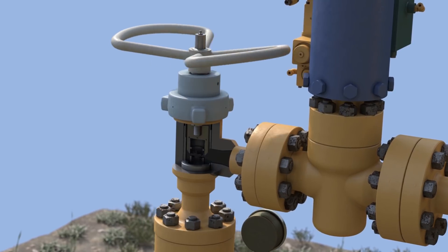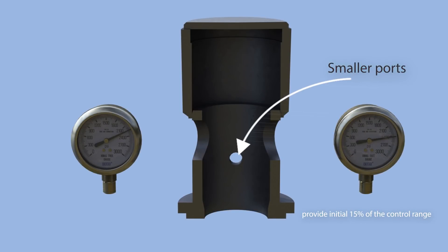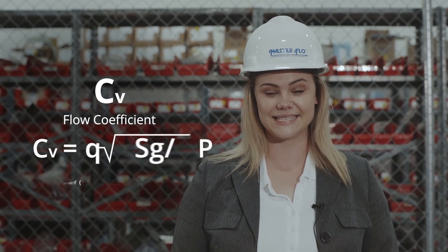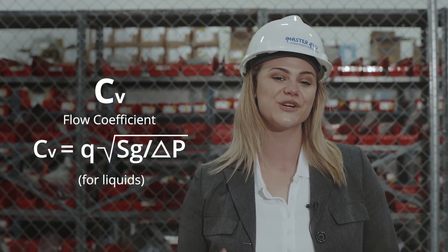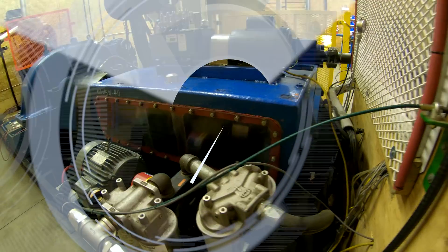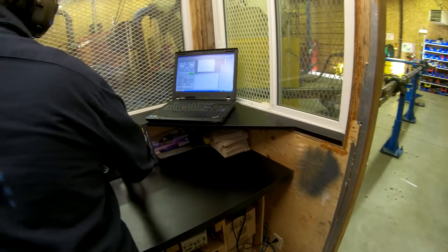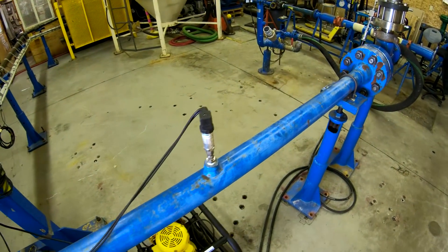MasterFLOW's standard trim provides a high level of control over its life. The smaller, lower ports provide the initial 15% of the control range, while the larger ports provide the valve's overall capacity. This results in an equal percentage flow characteristic curve and high liquid pressure recovery factor. Flow capacity testing establishes a flow curve over the valve travel and provides a basis for comparing trim styles. Each valve type has a unique curve based on internal geometry.